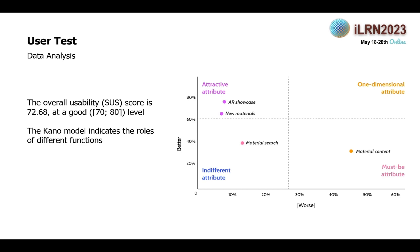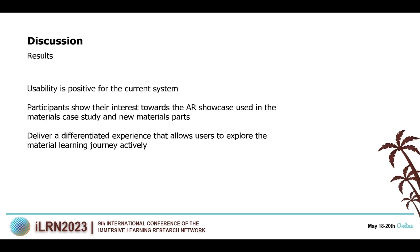The overall usability score is at a good level, and the Kano model indicates the nature of different functions. As the figure shows, AR showcase and new material are attractive features. Material search is indifferent, and material content is a must-be feature. In brief, the general usability is positive for the current system, and participants showed interest towards the AR showcase in the material case study and the new material section. We deliver a differentiated experience that allows users to actively explore the material learning journey.